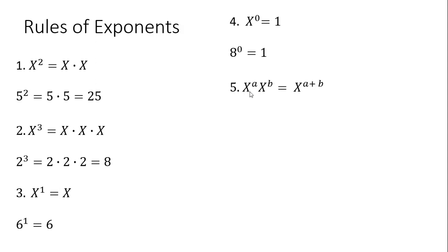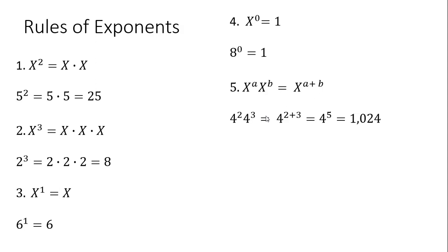Rule 5: x raised to the power of a multiplied by x raised to the power of b. We can simplify this by just adding up the exponents — not multiplying the exponents, but adding them up. So for example, 4 squared multiplied by 4 raised to the power of 3 is just 4 raised to the fifth power.